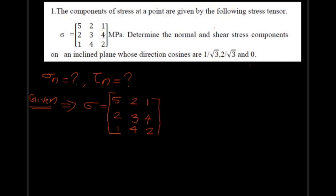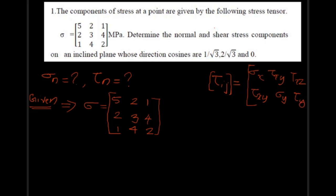Now we have the stress matrix in standard format — the stress tensor matrix format. The standard format is: σx, τxy, τxz in the first row; τyx, σy, τyz in the second row; and τxz, τyz, σz in the last row. This is the standard notation of the stress matrix.